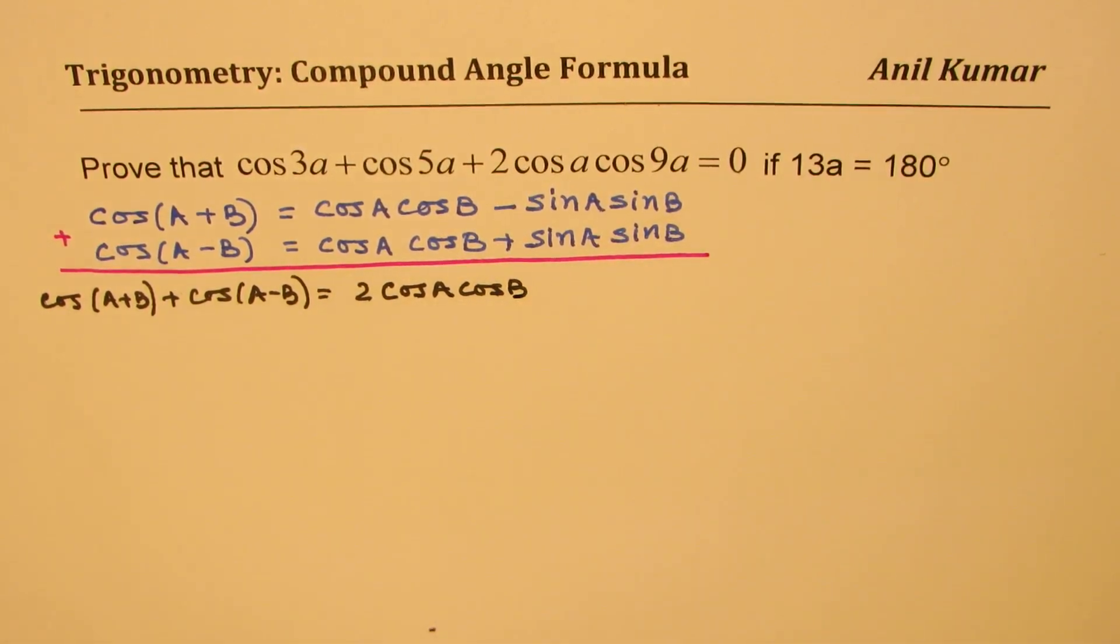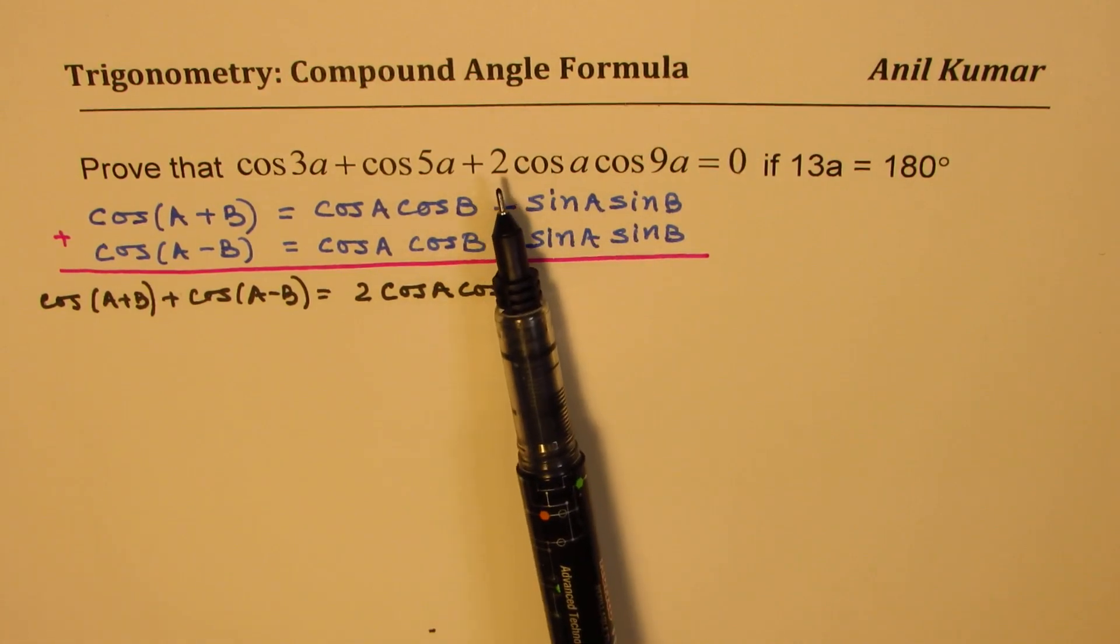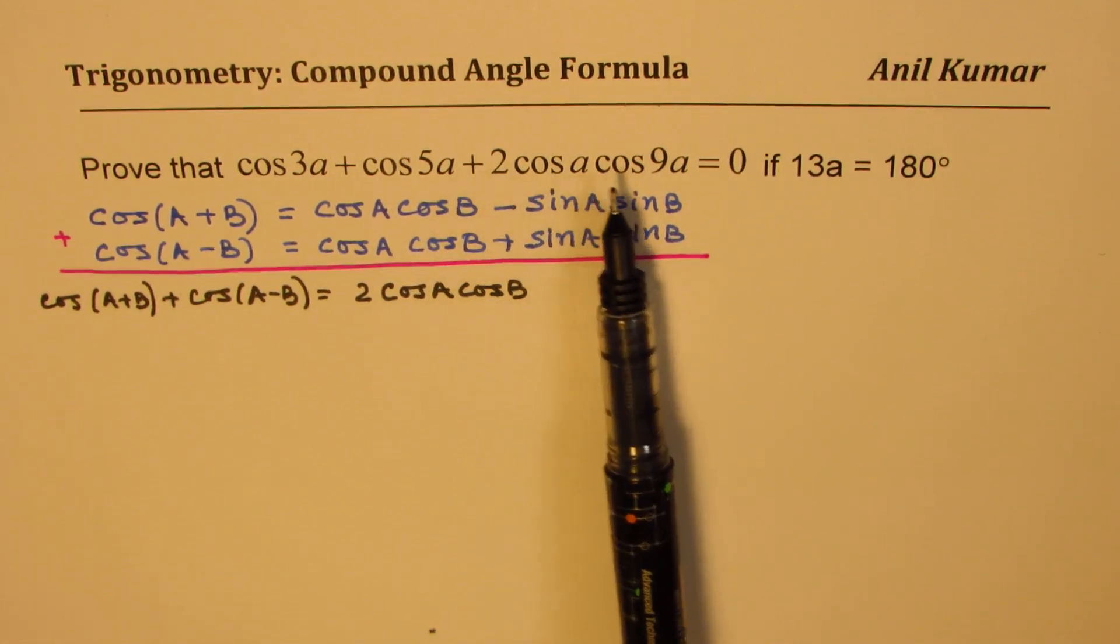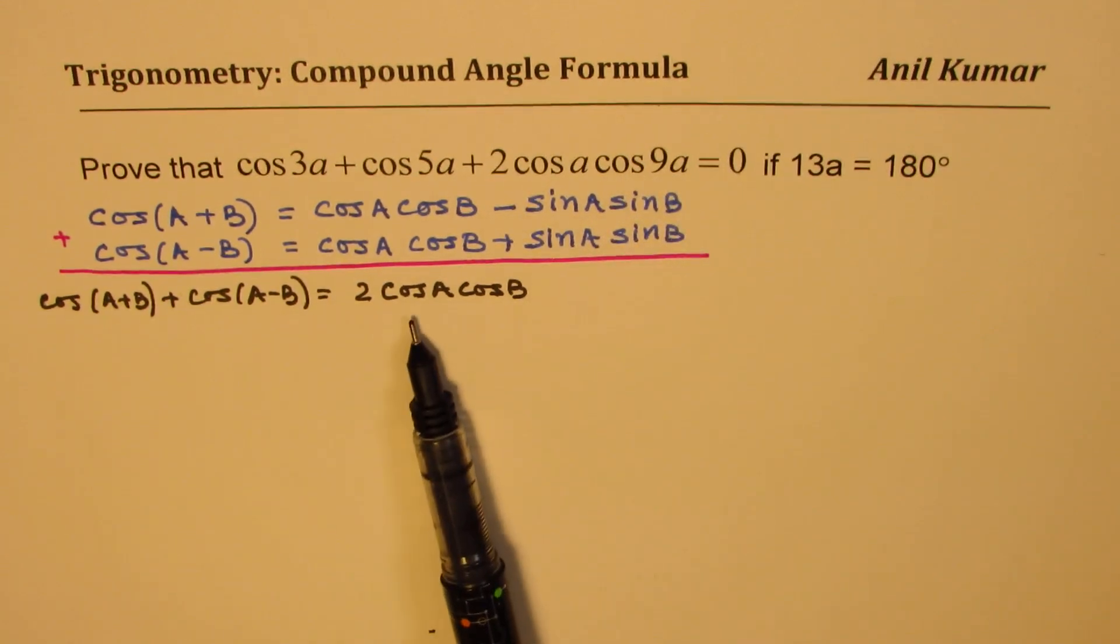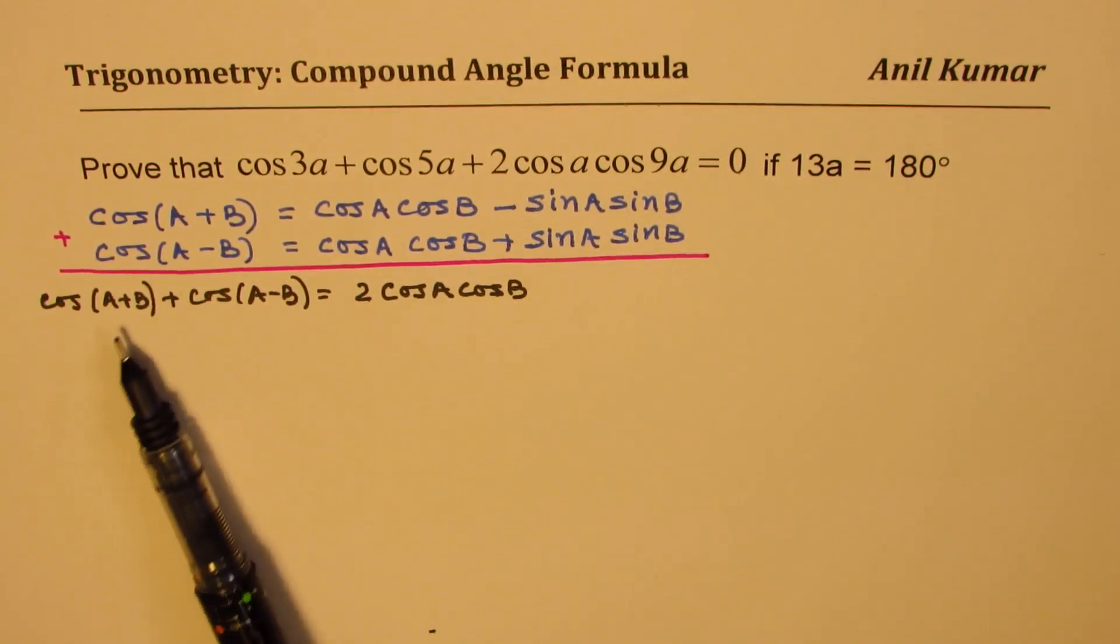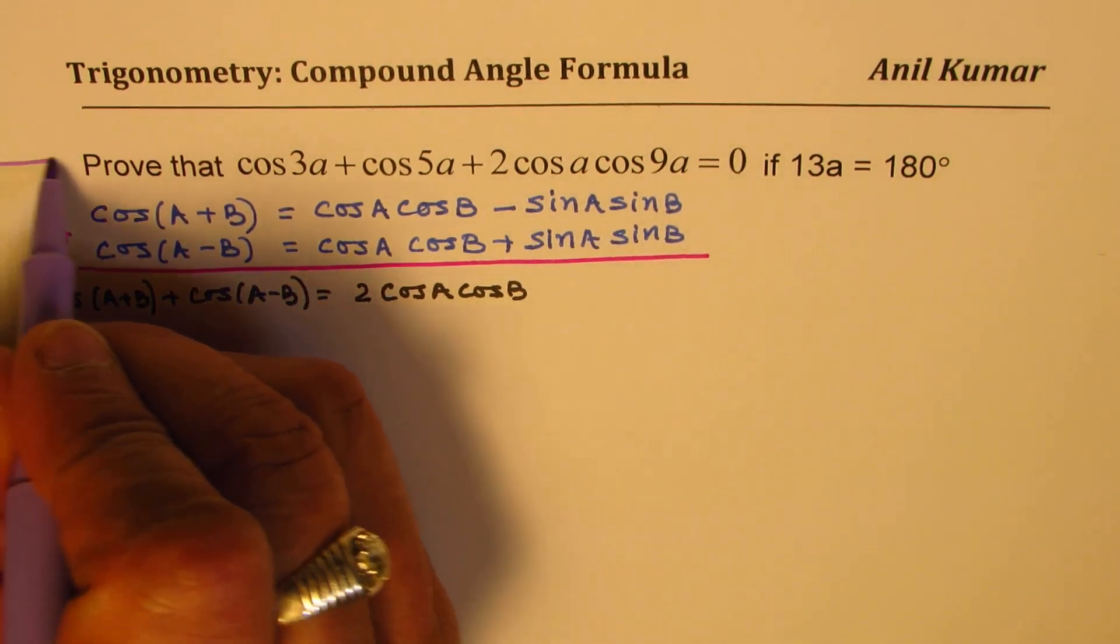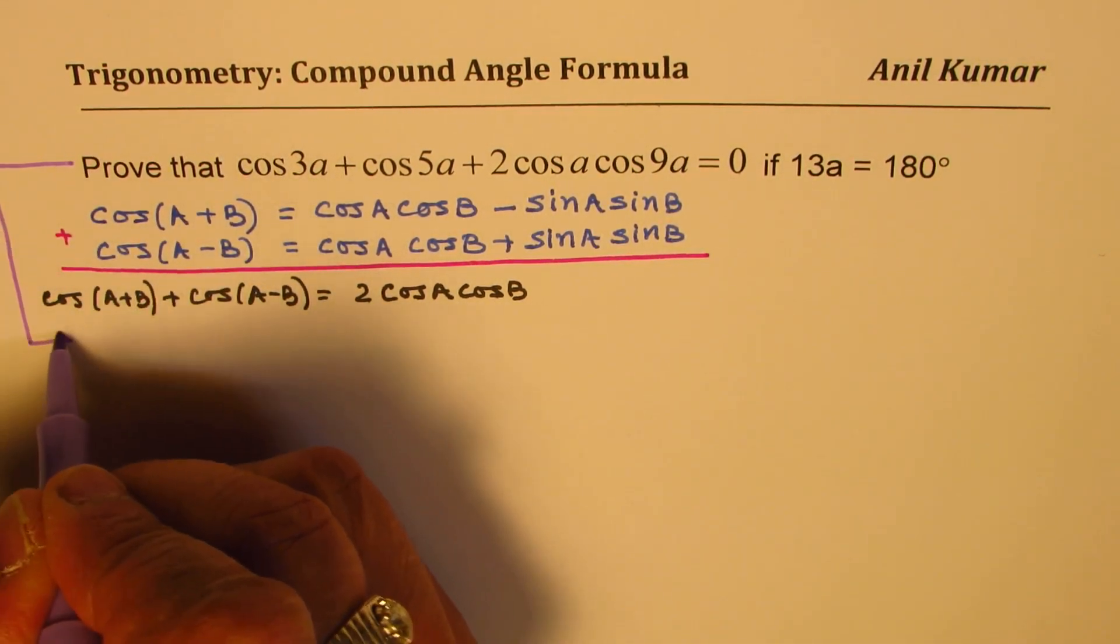So that is one formula which we can apply and we can change this term twice cos a cos 9a into a form using A plus B. So the first step which I am going to do is basically to write our equation using this particular formula.